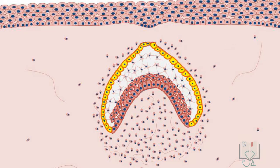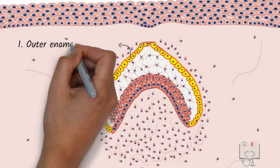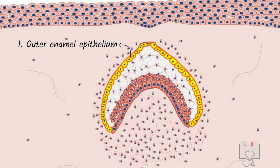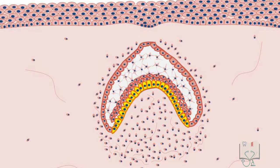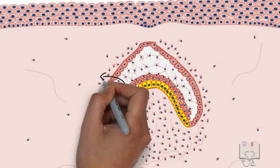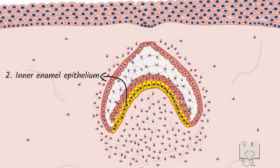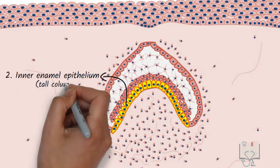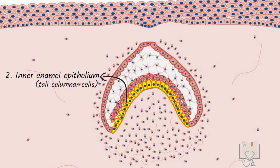A single layer of cells lining the convex surface of the cap forms the outer enamel epithelium, which are cuboidal in shape. A single layer of cells lining the concave surface forms the inner enamel epithelium, which are tall columnar in shape.